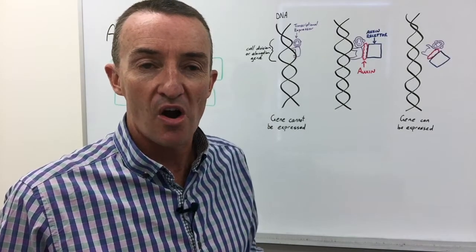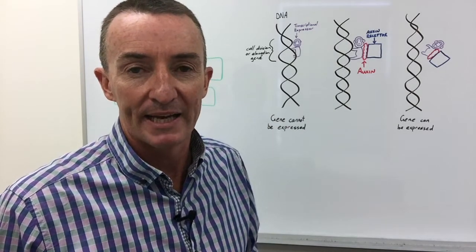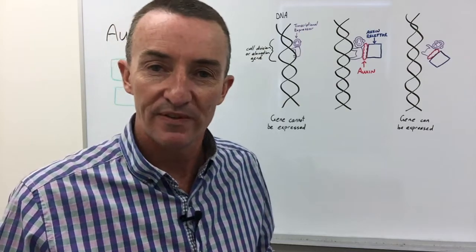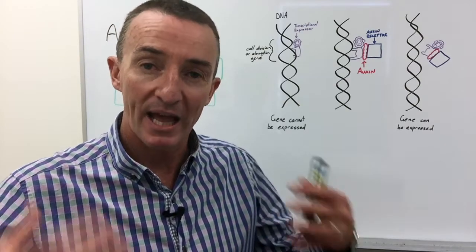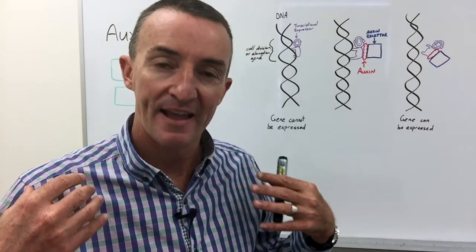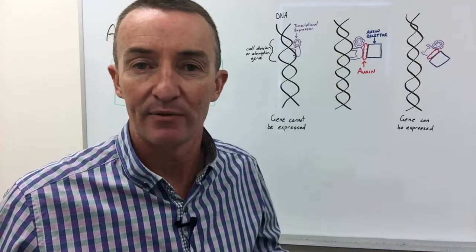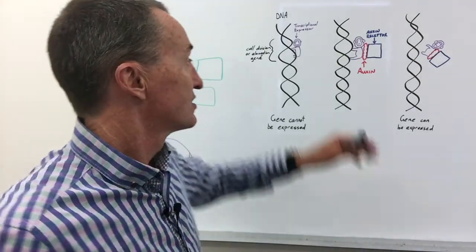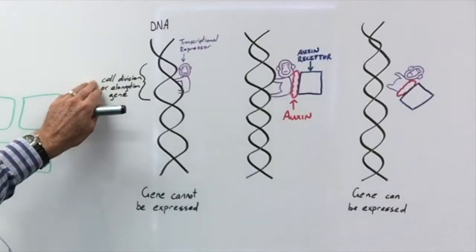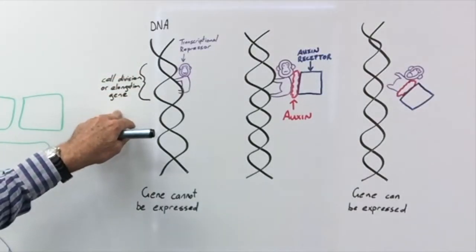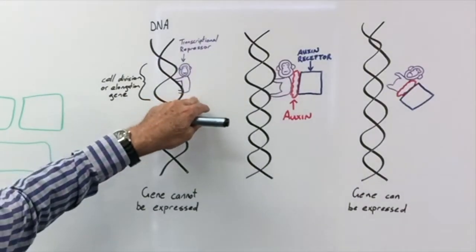How do auxins regulate plant growth? Many sports fans will be familiar with the term that a player has a monkey on their back. With the monkey on their back, they can't win the game. It's the same with genes. For example, if we have the gene for cell division or cell elongation, it has a monkey on its back.